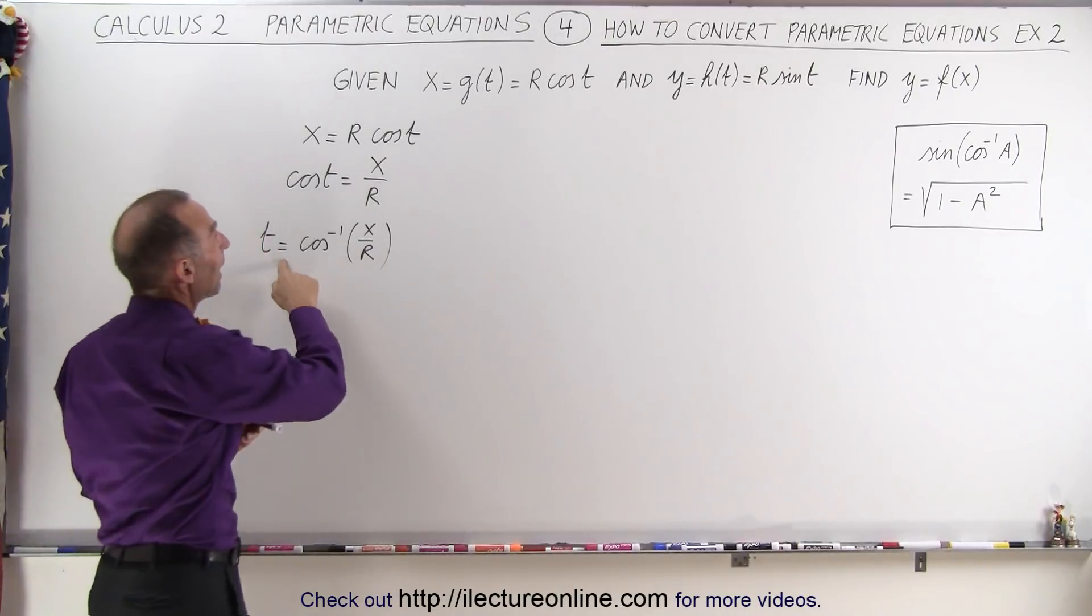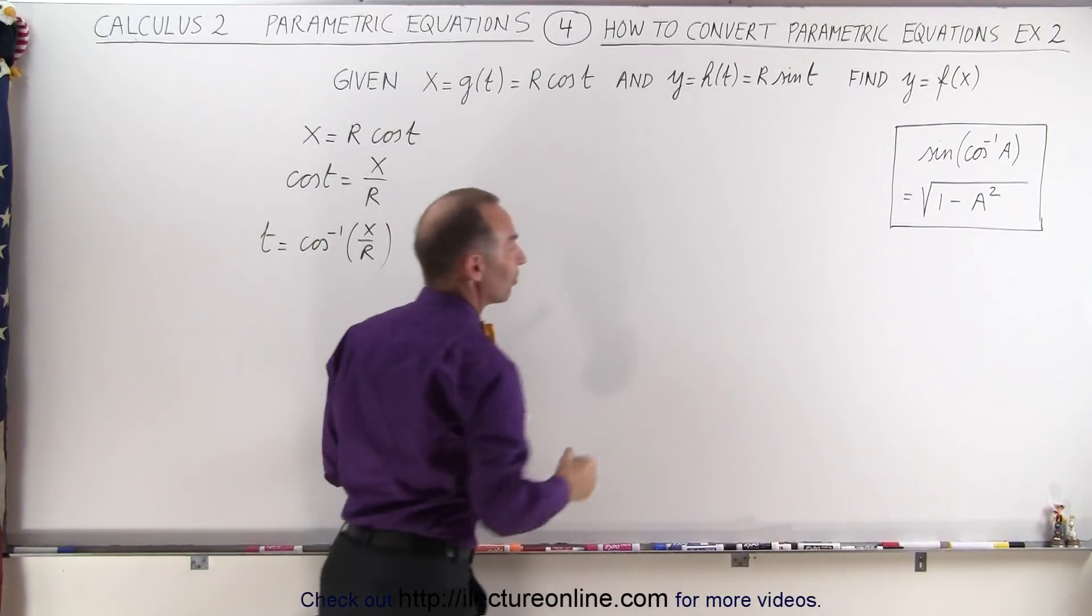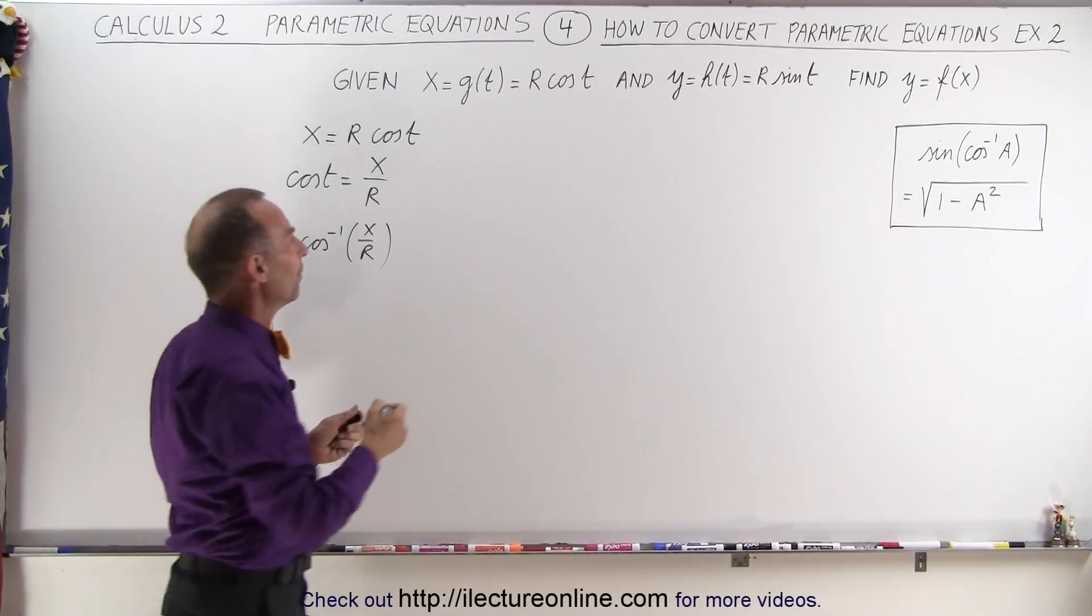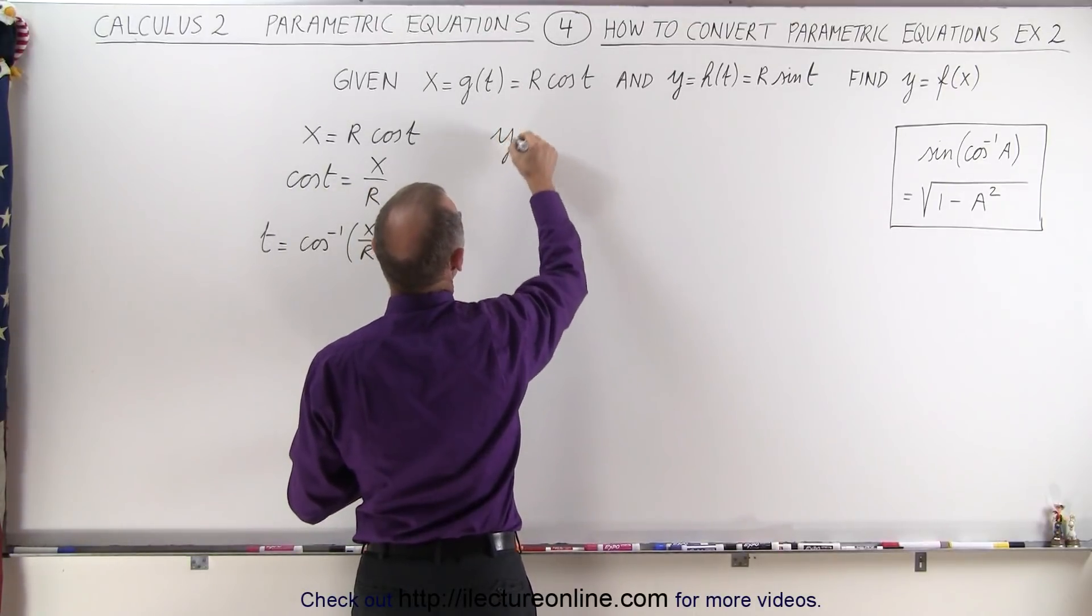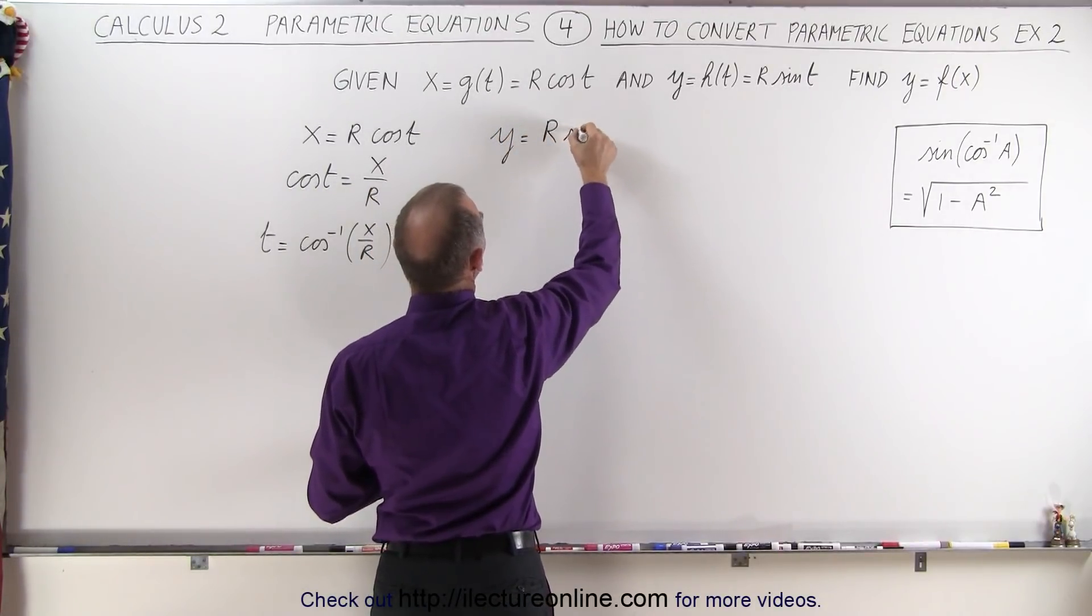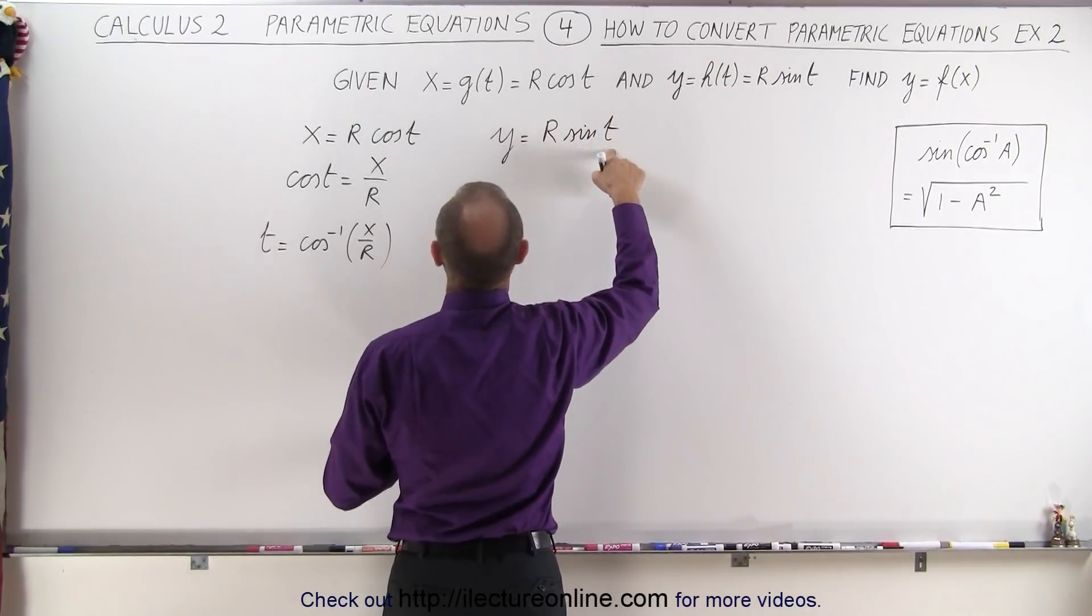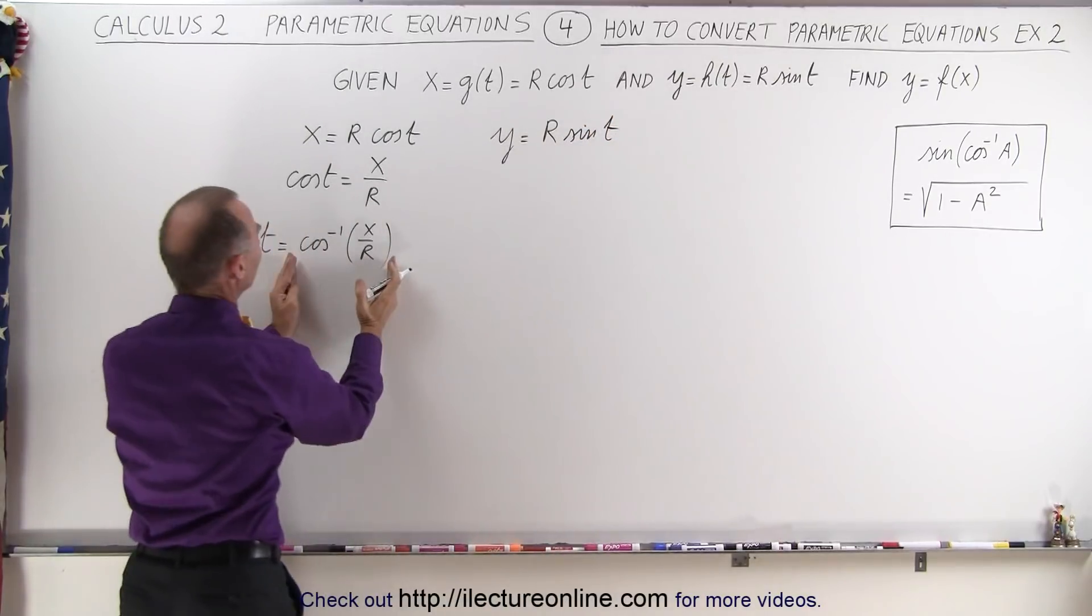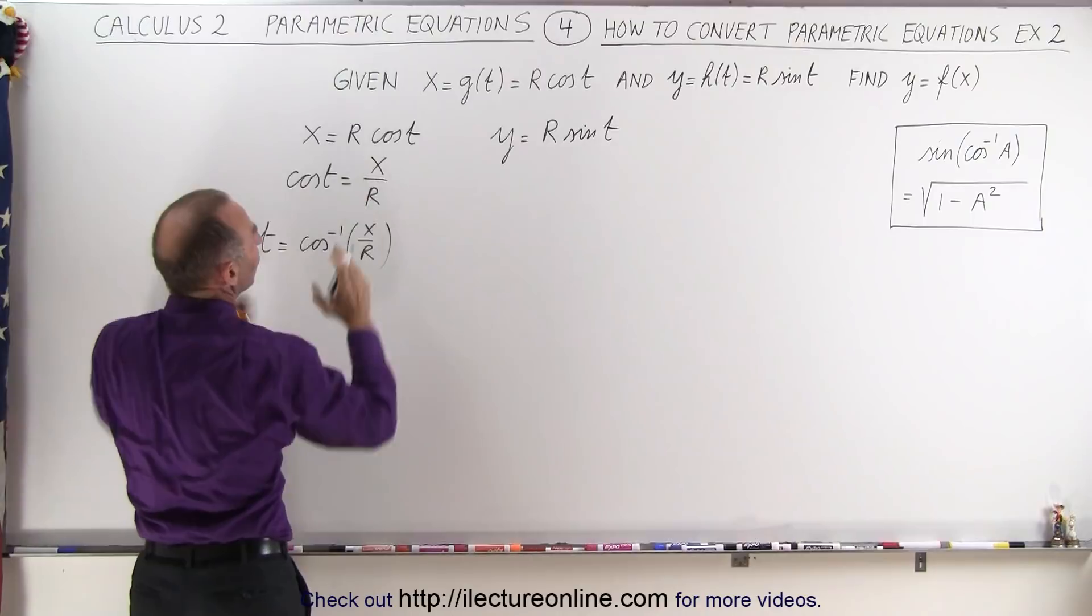And then we take that and plug it into the other equation just like we saw in the previous video. So now we can write that y is equal to r times the sine of t, but instead of t we're going to replace it with what we found in the first equation.